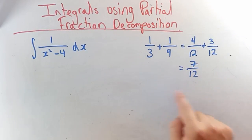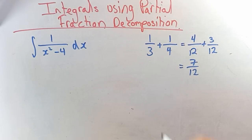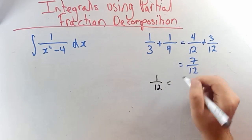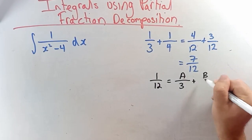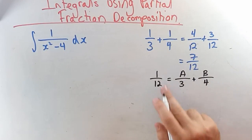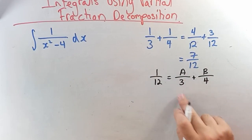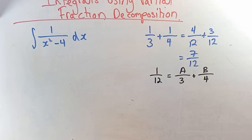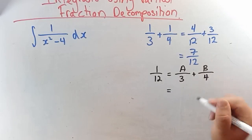Partial fraction decomposition is when we do this process in reverse. So if we had a fraction 1 on 12, is there a number a and b such that a on 3 plus b on 4 gives us 1 on 12? Can we split this up into the factors of 12?